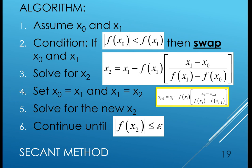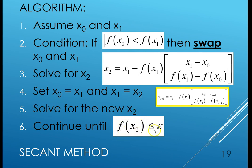Step four: for the next iteration, set the new x sub zero to be the old x sub one, and the new x sub one to be x sub two. Then solve for the new x sub two. Continue until the absolute value of f(x2) is less than or equal to the specified error tolerance.